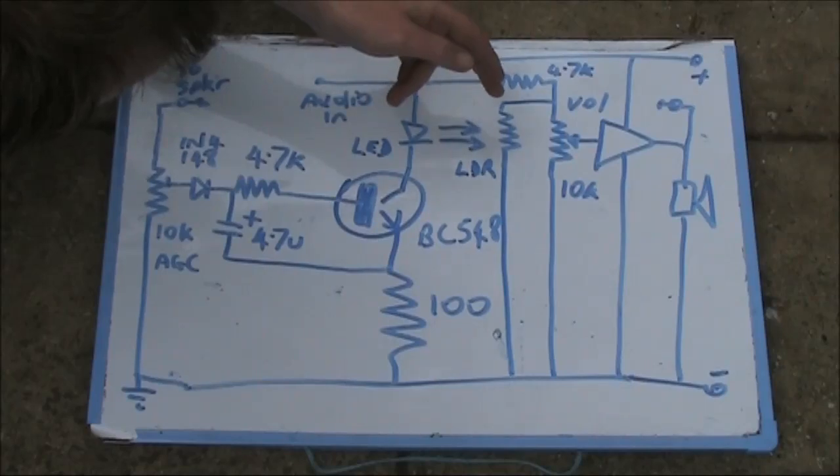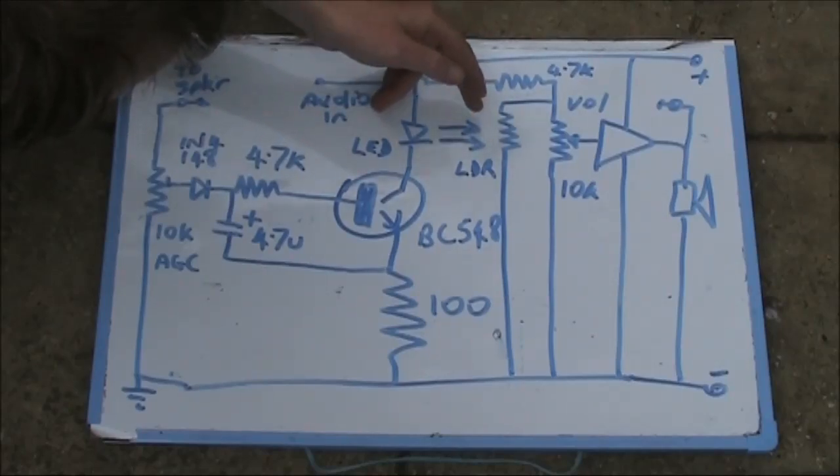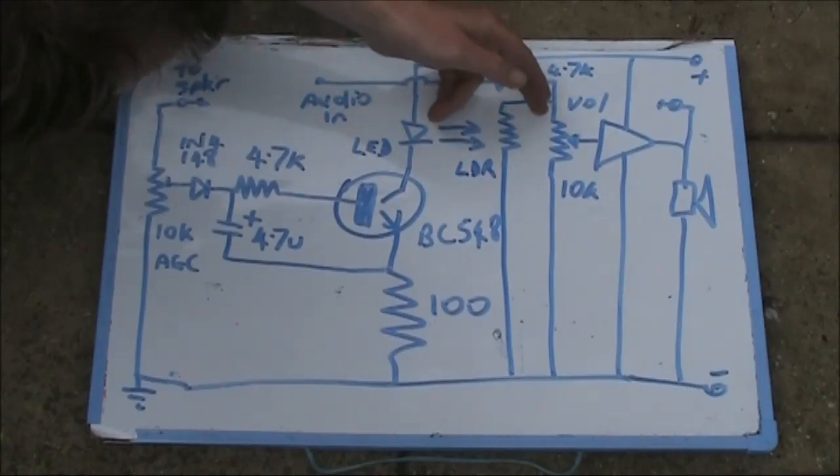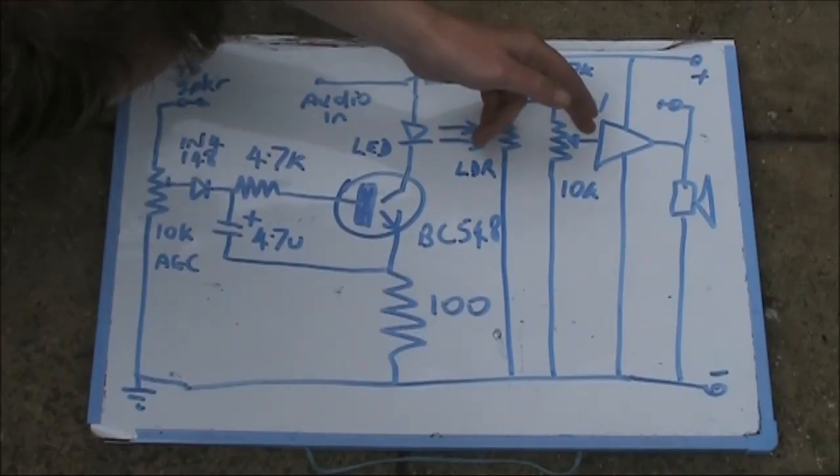When there's no light, the resistance of the LDR is high and it has a negligible effect in the circuit. However, when light strikes it, its resistance drops.